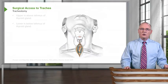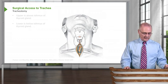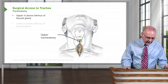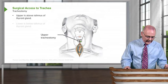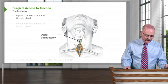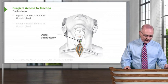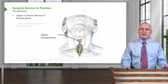The other approach is the tracheotomy, and there's an upper one and a lower one. For the upper tracheotomy, this is a vertical incision running in the area of the anatomy between the inferior aspect of the cricoid cartilage and the isthmus of the thyroid gland below, providing surgical access to the trachea in this space.